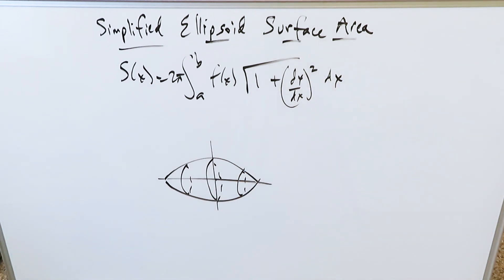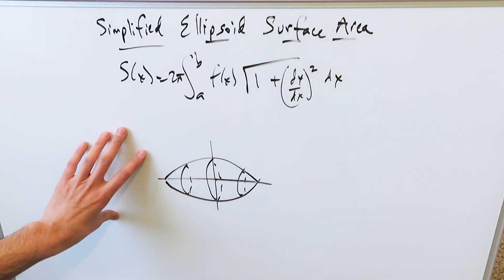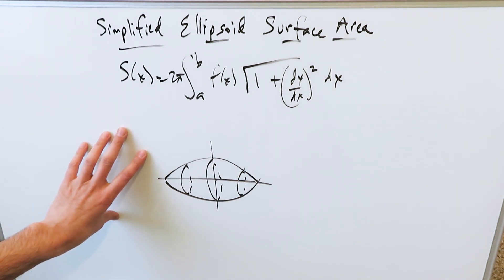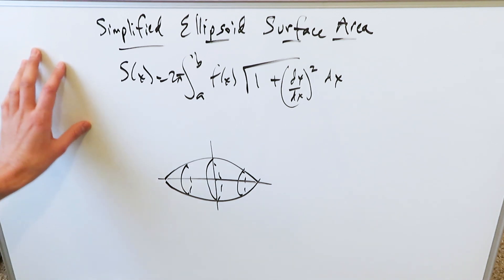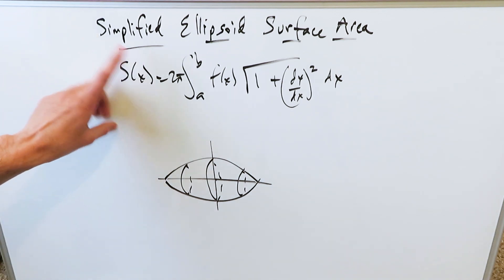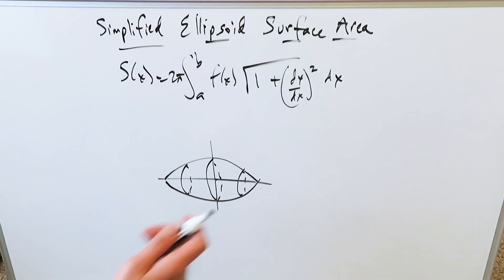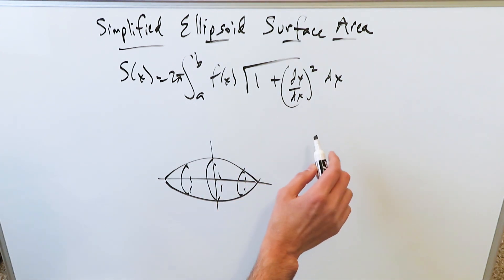The accurate formula is beyond the scope of basic calculus, or beginner's calculus, or even Calculus 1 and 2 — it's beyond that level. For the purposes of this channel, we're looking at a simplified version.